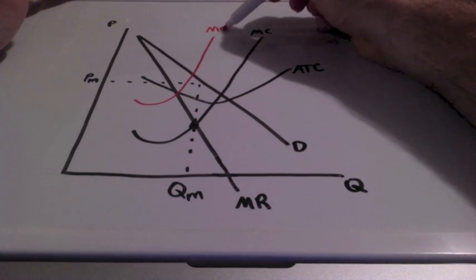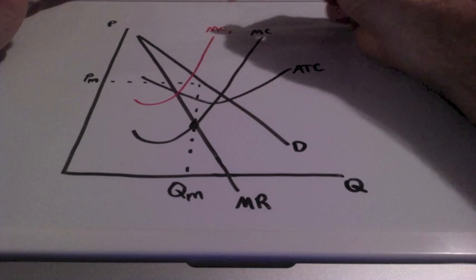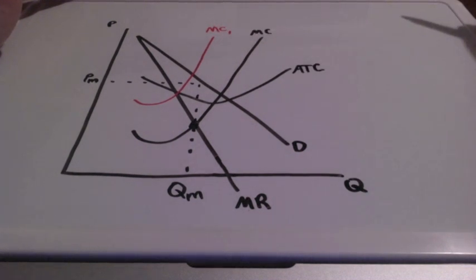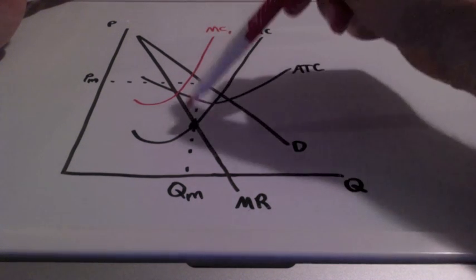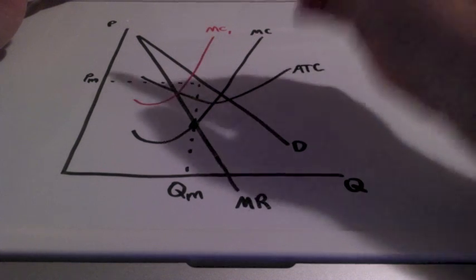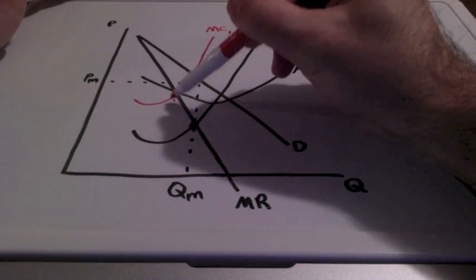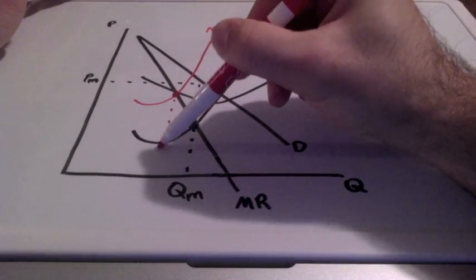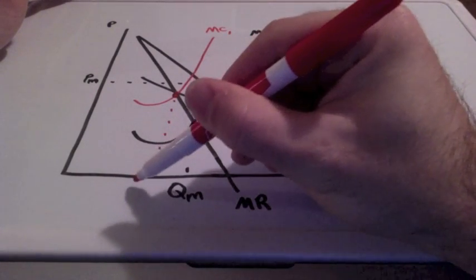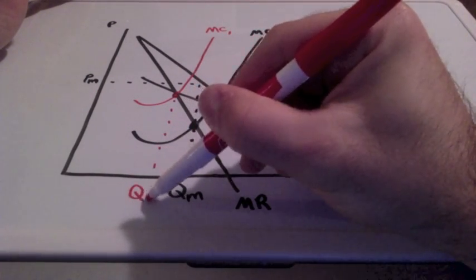This becomes marginal cost curve 1. And we're going to locate our new profit maximizing quantity and price. We find the intersection where marginal revenue equals marginal cost. Bring this all the way down. This represents our new quantity.